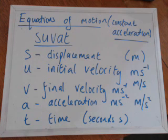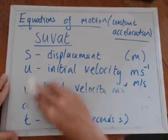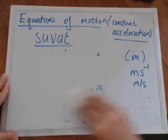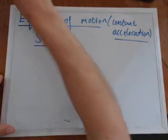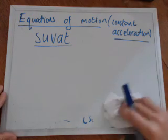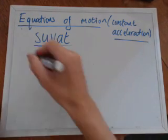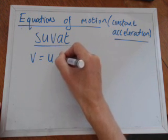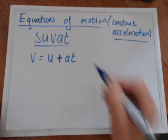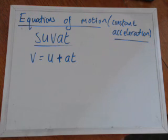And now we'll write down the equations that have developed from the definitions of acceleration and velocity. The first equation I'm going to write down is V equals U plus AT. I'll call that number one.